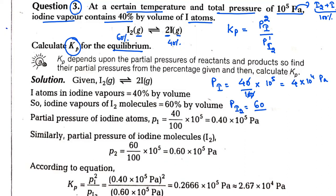Similarly, for iodine molecules at 60% volume, we calculate 60 by 100 times the total pressure. This gives us 6 times 10 to the power 4 pascals. Now we have the pressure of both iodine atoms and iodine molecules.